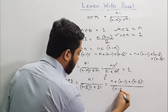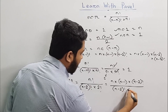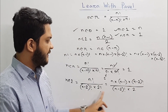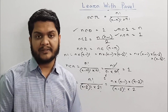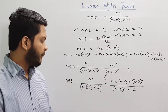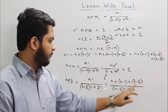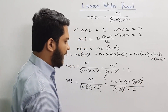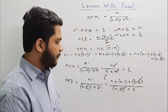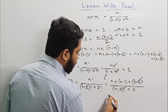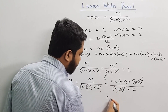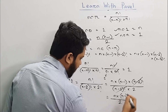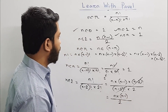We are going to look at n minus 2 factorial into 2 factorial. 2 factorial is 2 into 1. We are going to look at n minus 2 factorial and n minus 1 factorial, and 2 factorial.